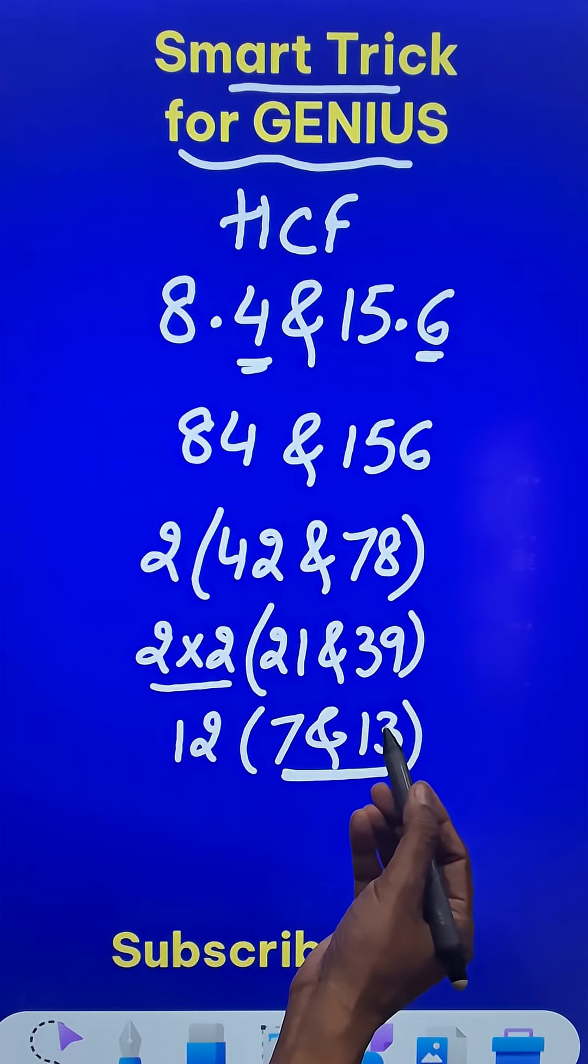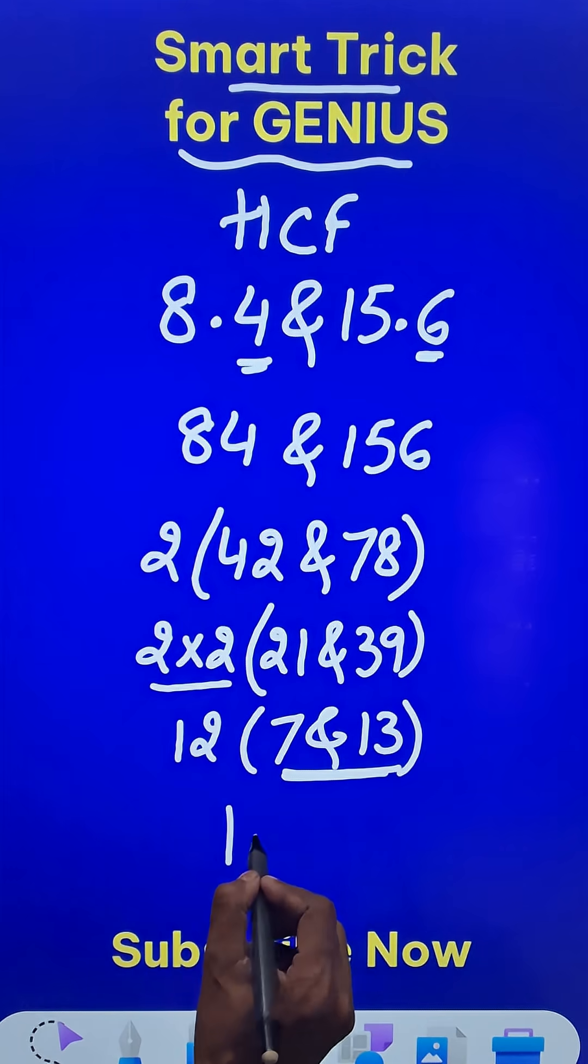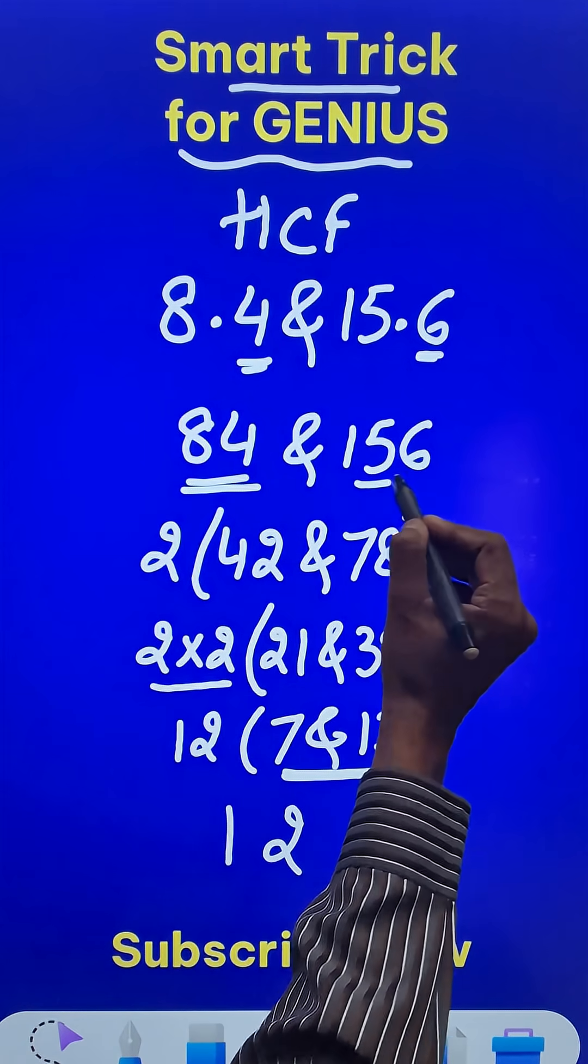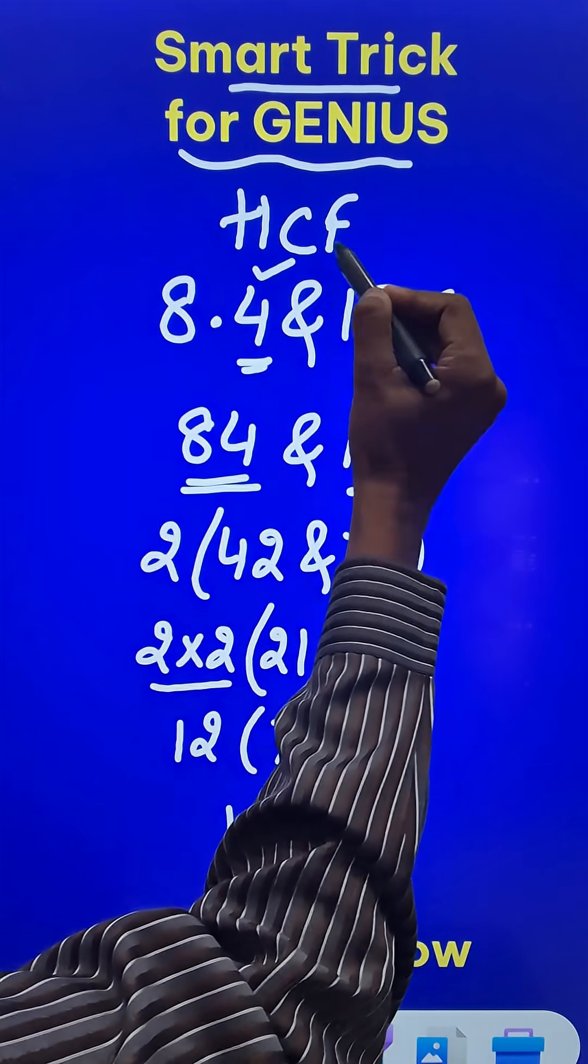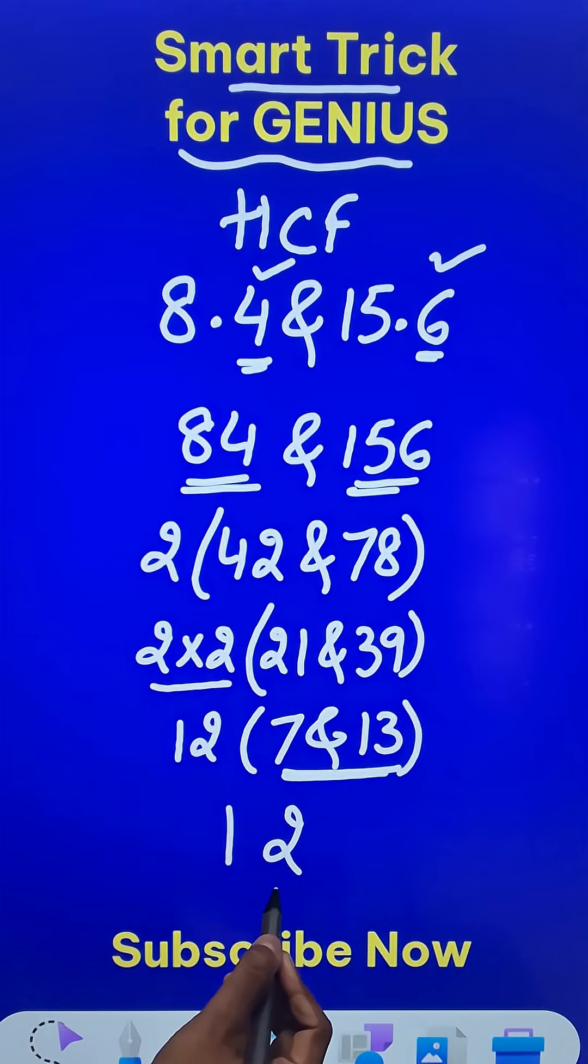Now 7 and 13 are co-prime numbers, so 12 is the HCF of these two numbers 84 and 156. Since both of these numbers had one decimal place, your answer will also have one decimal place, and the HCF of these two decimals is 1.2.